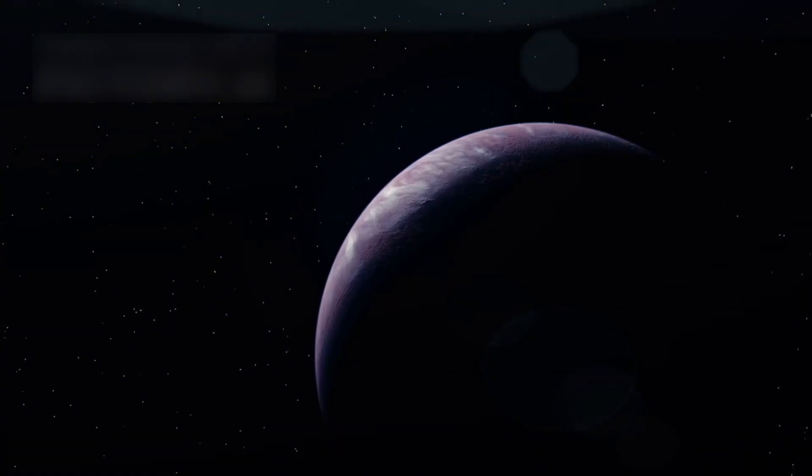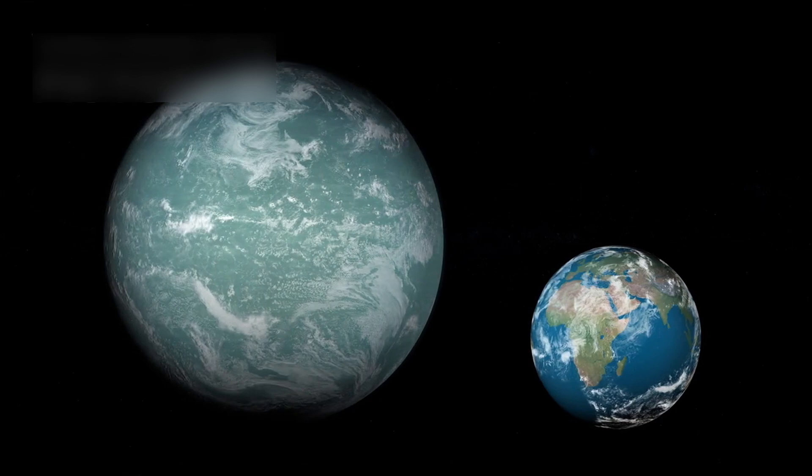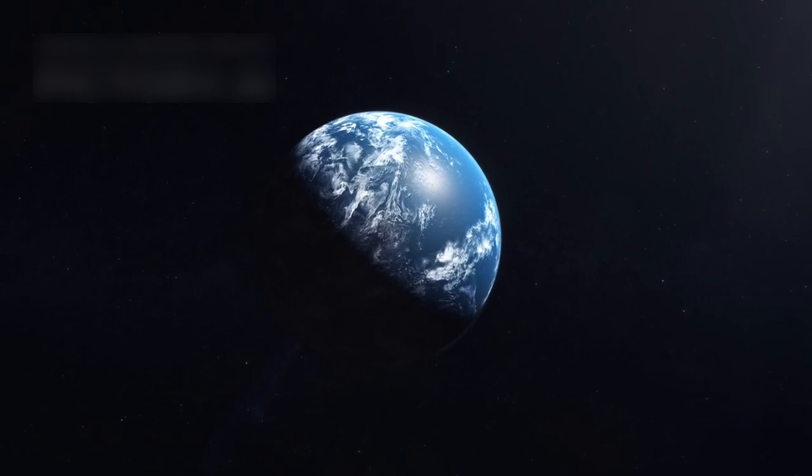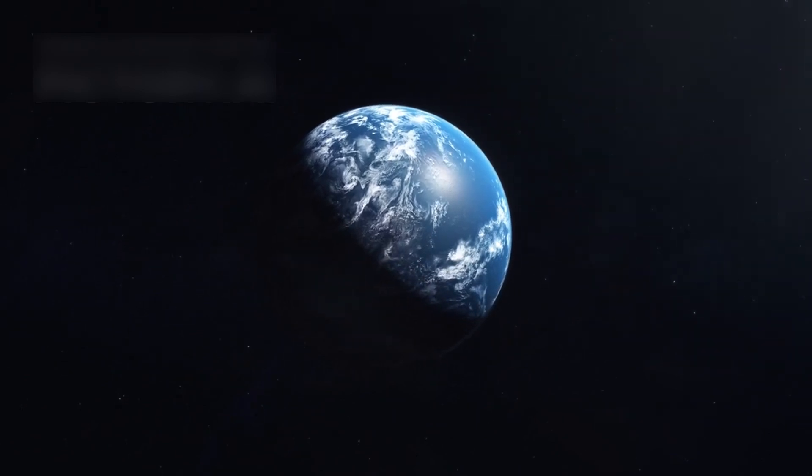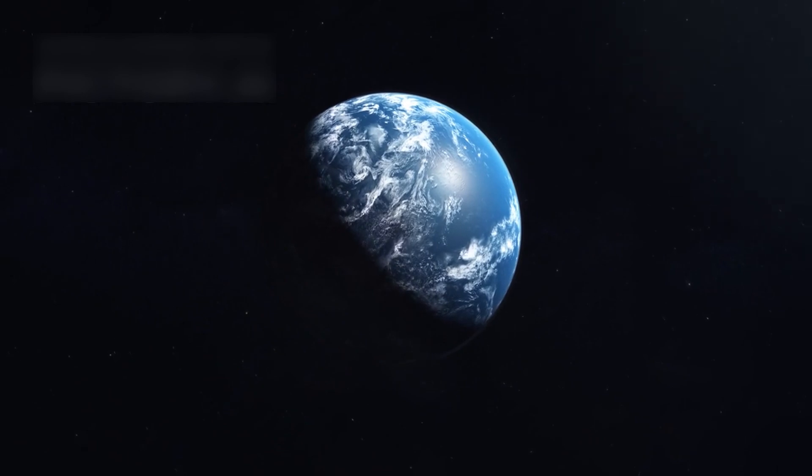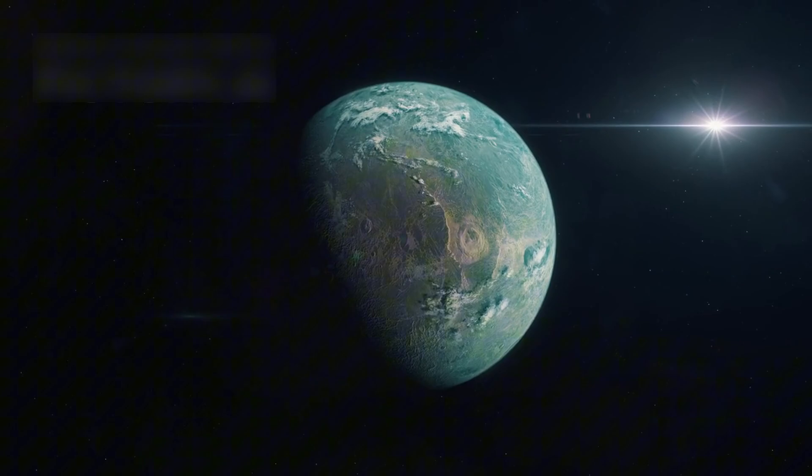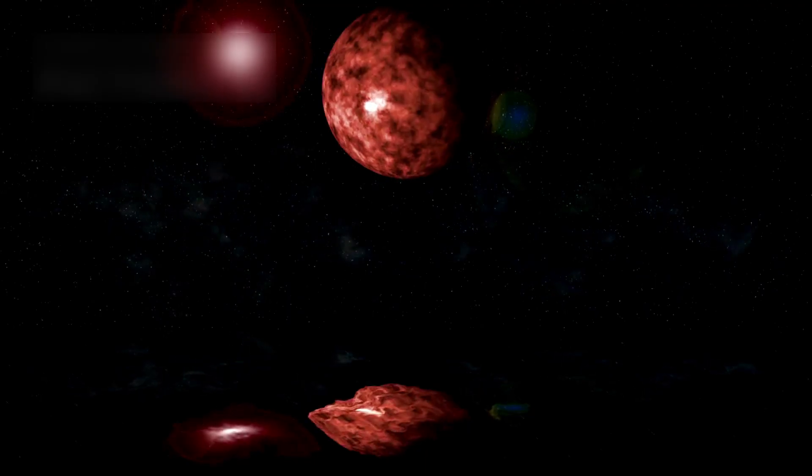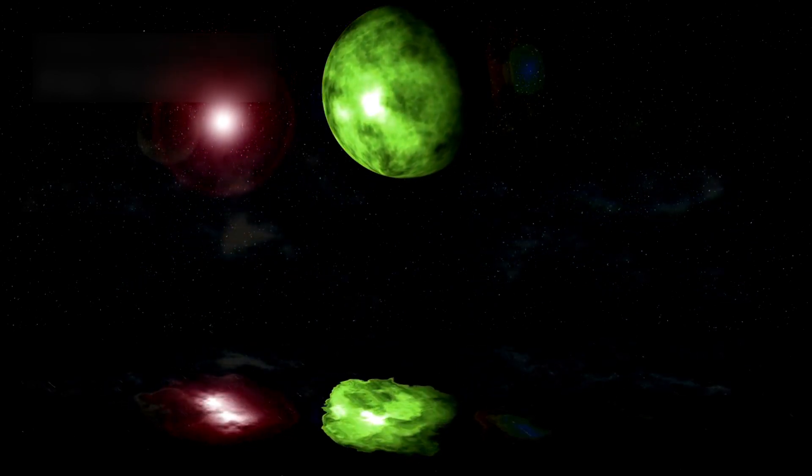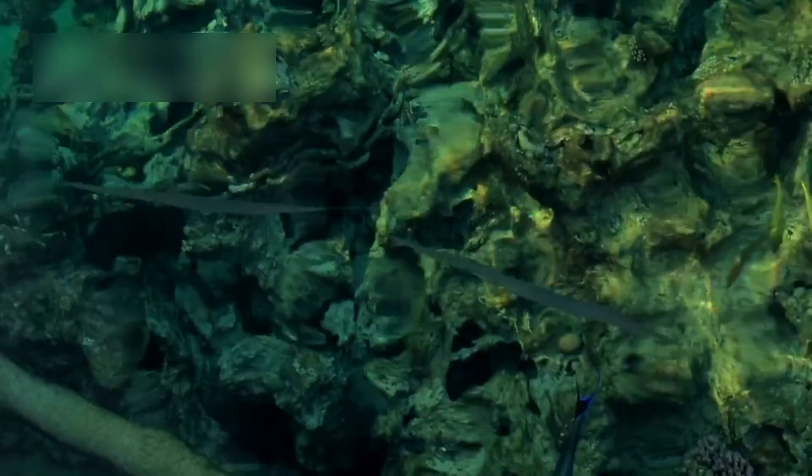K2-18b isn't a rocky planet like Earth. It's what's known as a sub-Neptune, larger than Earth but smaller than Neptune. What intrigued scientists even more was its classification as a Hycean world, a term coined by Dr. Niku Madhusudhan of Cambridge University. Hycean planets are a new category of potentially habitable worlds. They are believed to have hydrogen-rich atmospheres and global oceans hidden beneath thick cloud layers. These conditions could be ideal for microbial life to thrive.